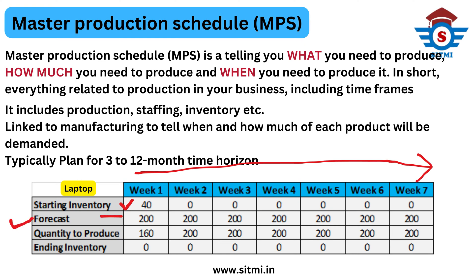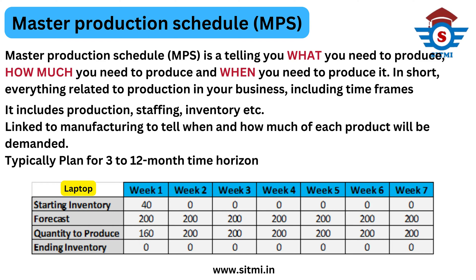As far as sales forecast is concerned, in each week the requirement is 200 quantity. We have to produce the quantity based on the sales forecast. So in Week 1, if we consider our on-hand inventory of 40 and our sales forecast of 200, we have to produce only 160 quantity. Subsequently, in Week 2, we have to produce 200 quantity because we don't have anything on hand and our sales forecast is completely 200. Similarly for Week 3 up to Week 7.